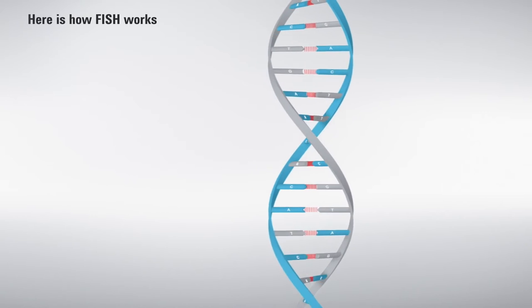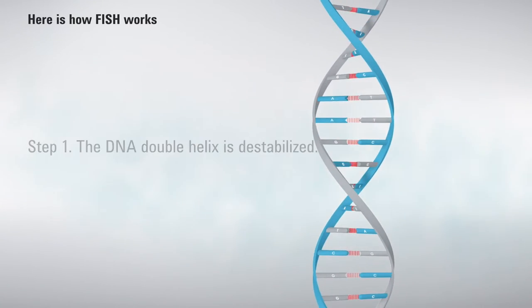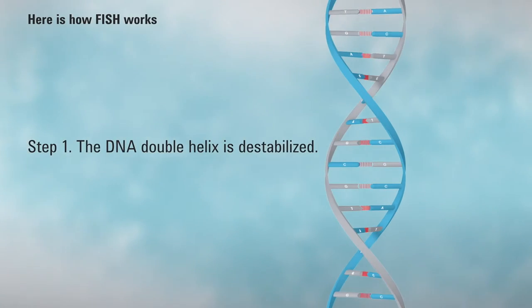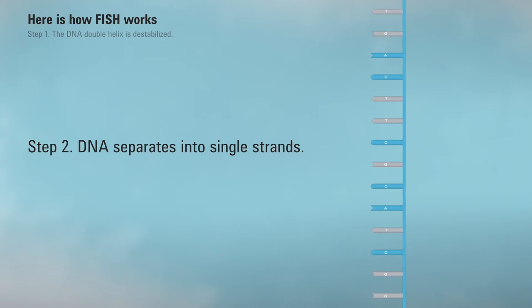Let's review how fish works. First, the DNA double helix is destabilized. Then, the DNA separates into single strands.